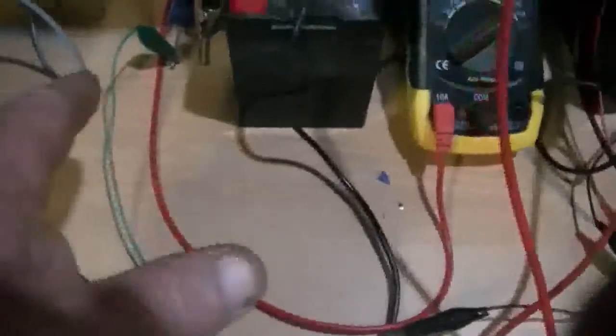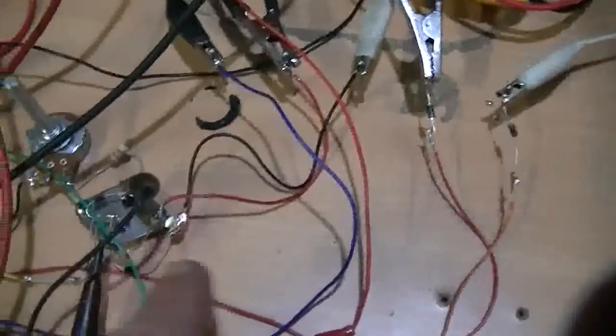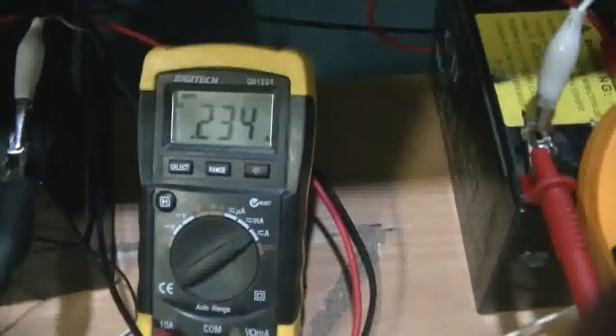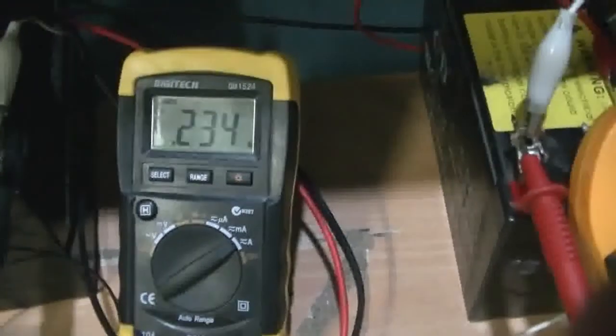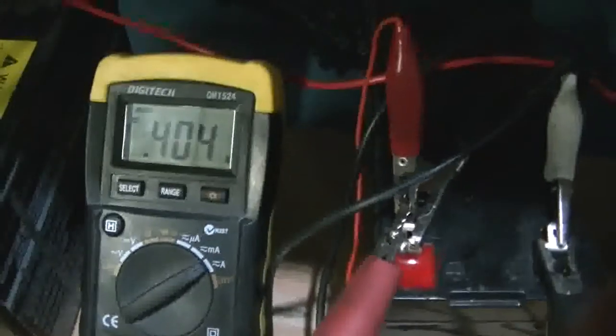Now we're coming out of the second one off the positive and we're going into the negative of the voltage doubler and then out of the voltage doubler positive and back into the run coil. So there's 234, 233, 234 milliamps coming out of the batteries. And there's 404 milliamps from the voltage doubler going into the coil.